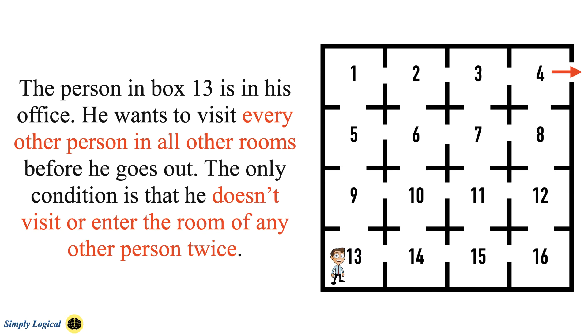Let me repeat the puzzle. The person in box 13 is in his office. He wants to visit every other person in all other rooms before he goes out. The only condition is that he doesn't visit or enter the room of any other person twice.